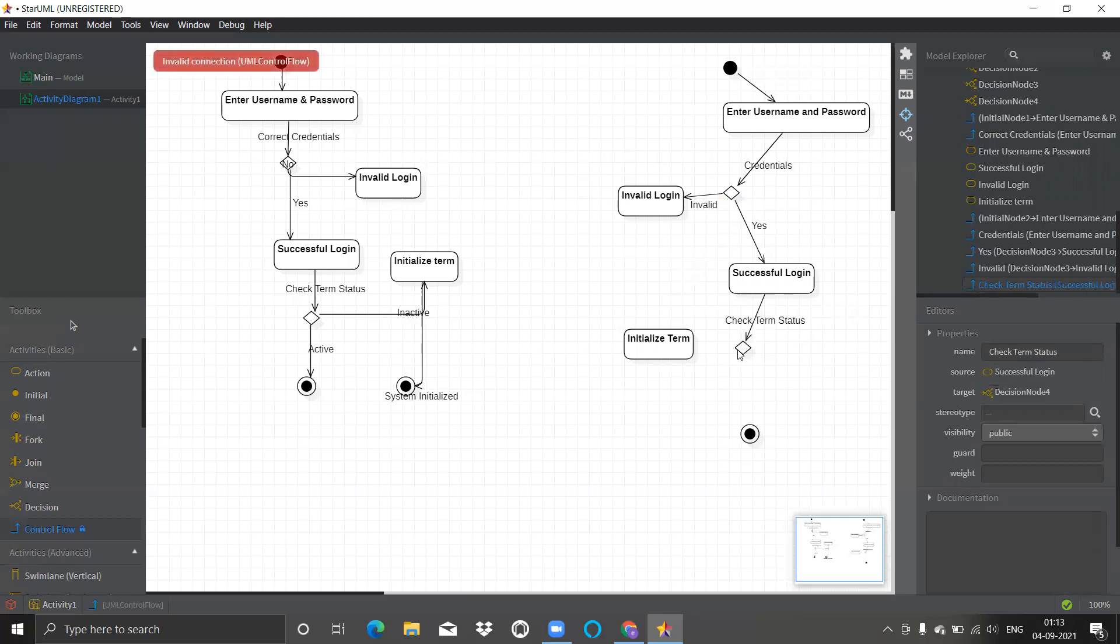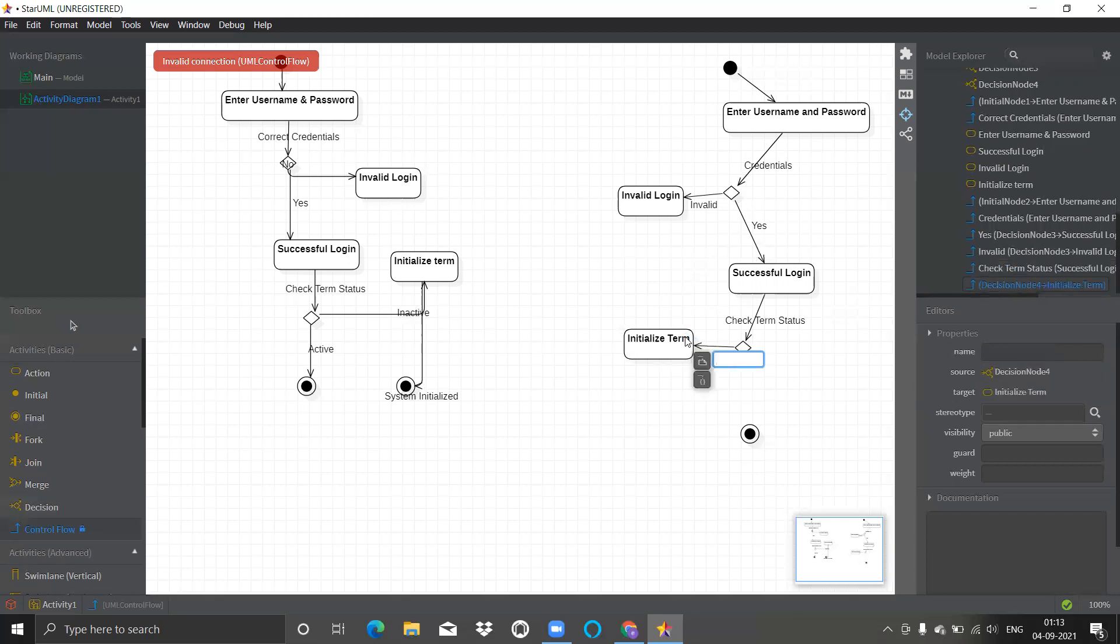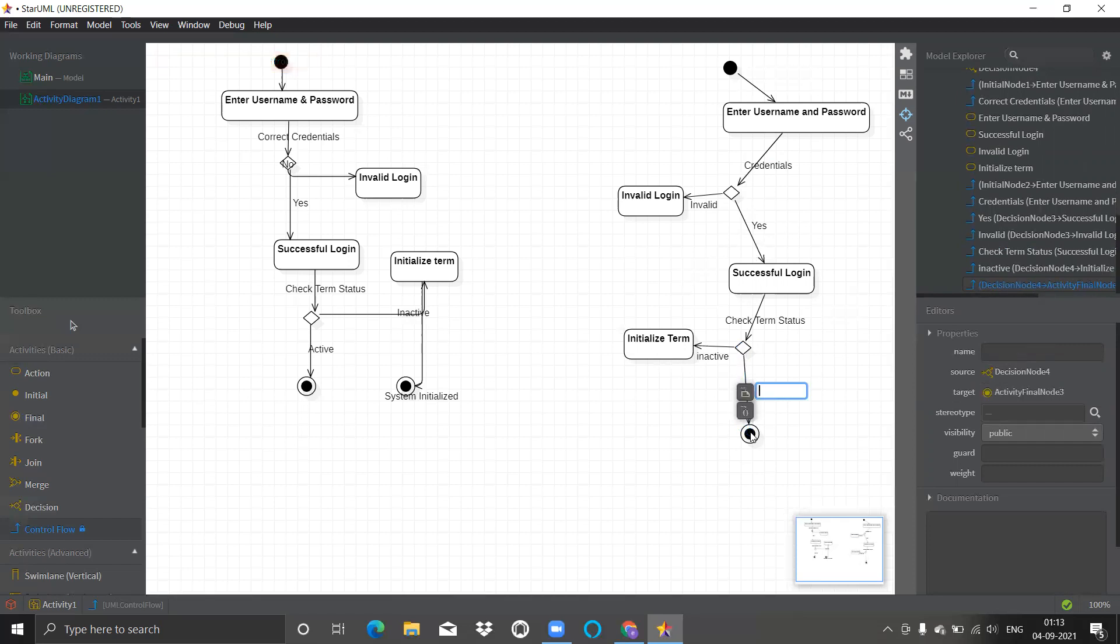If invalid then it will go back. If successful login is there, it will go back to again the decision. Check term status. And then if term status is inactive then it will initialize. If it is active then it will definitely stop the term. I have drawn this diagram.